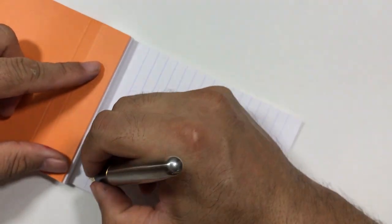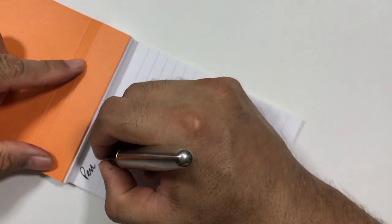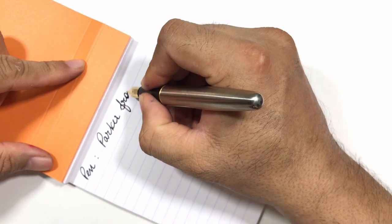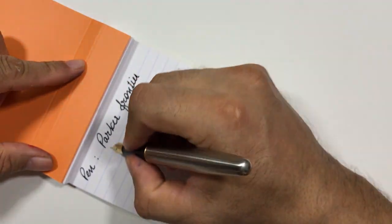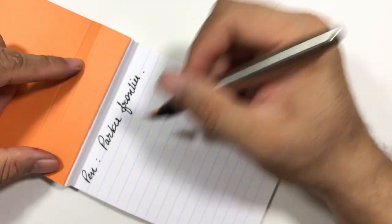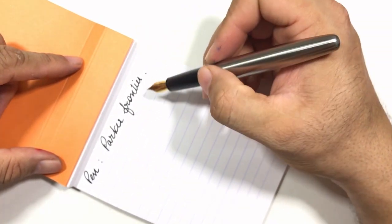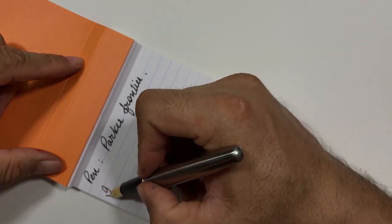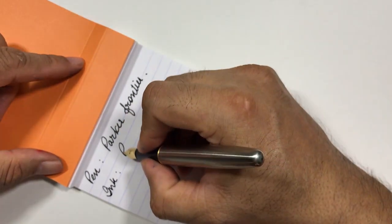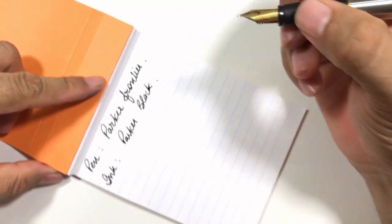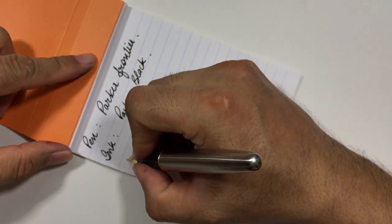So the pen is Parker Frontier. You can see here this Parker has almost a broad medium-broad nib. In case Parker itself. So let's write something.